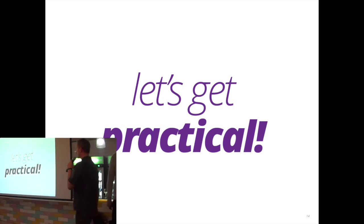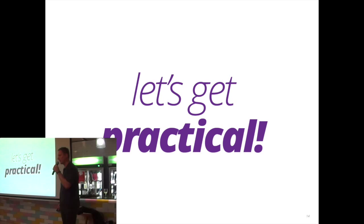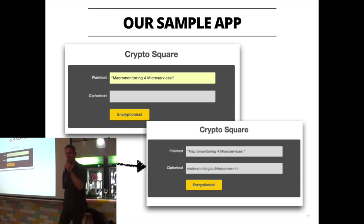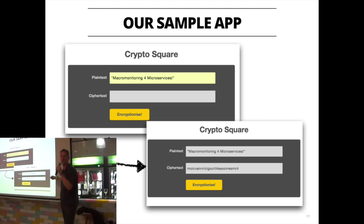There's a little reference application we're going to refer to quite regularly tonight. It's not overly complicated, but I want to take a couple of minutes to talk you through how it works, because it's going to help explain some concepts later. This is a little app which implements an encoding algorithm — I was scolded by one of our security guys for calling it encryption — called CryptoSquare. You type in some plain text, click the 'encryptionize' button, and you get an encoded version of that plain text out the other end. That's all the application does.